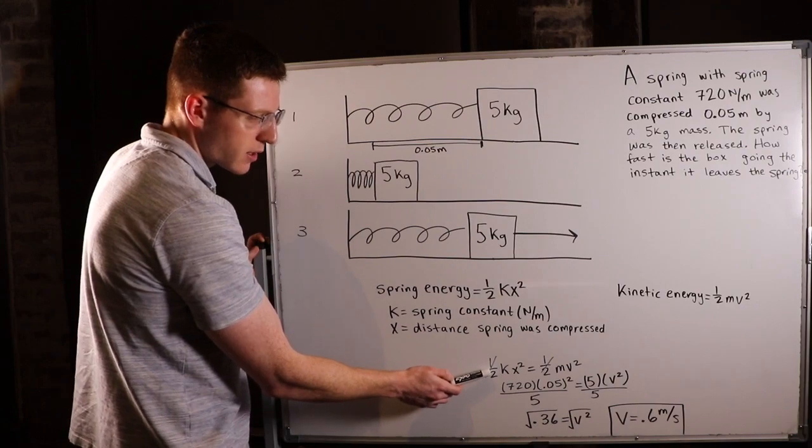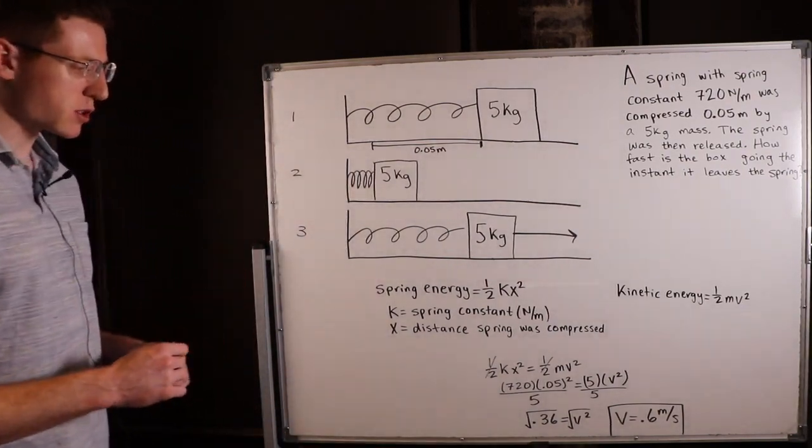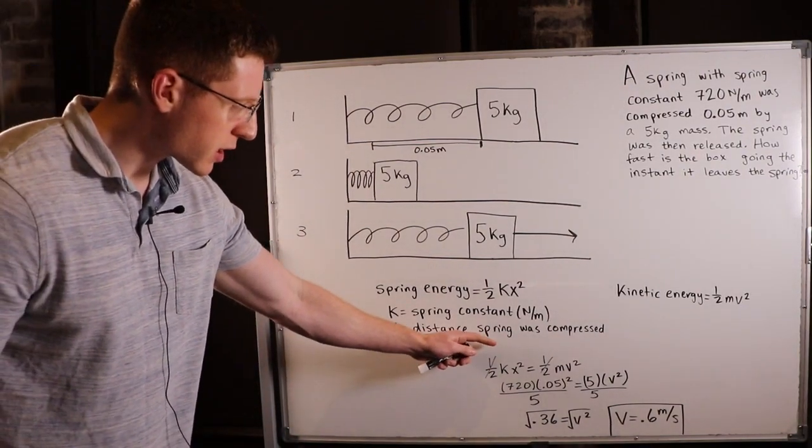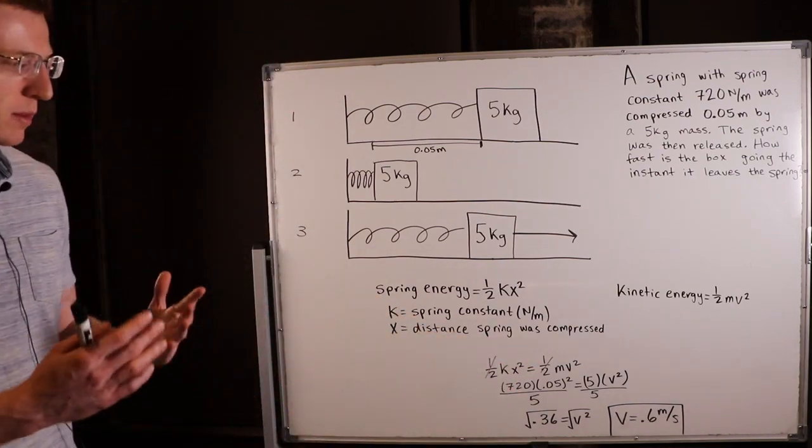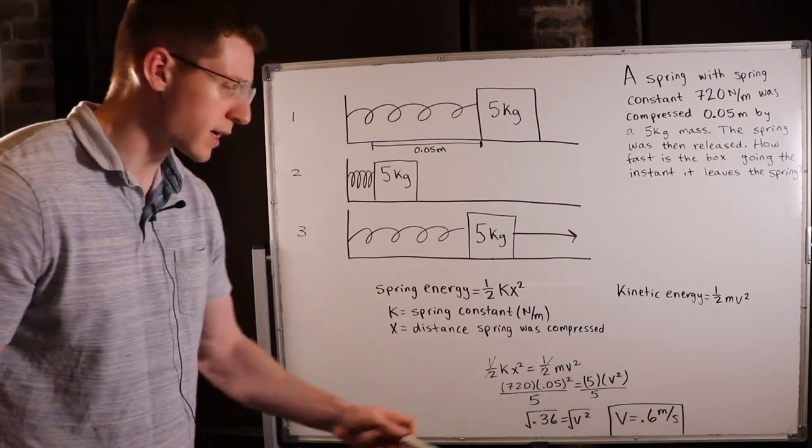And the first thing I did was I crossed out the one half, because whenever something appears on both sides of an equal sign I can cancel it out.